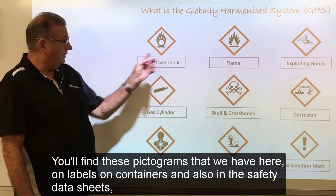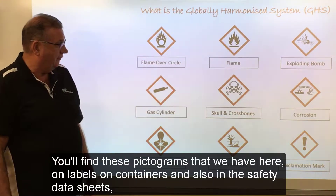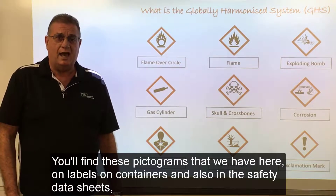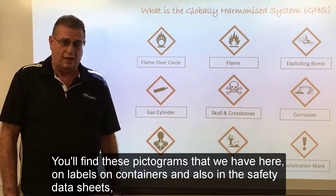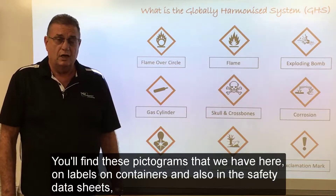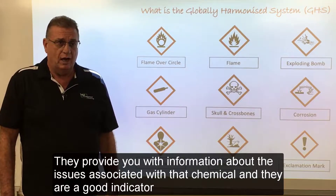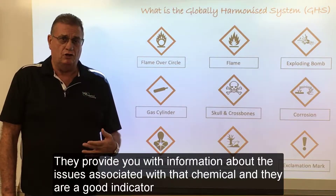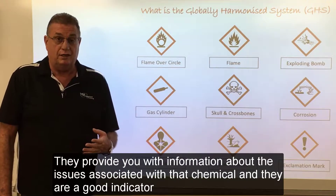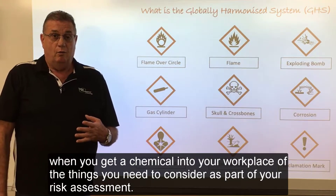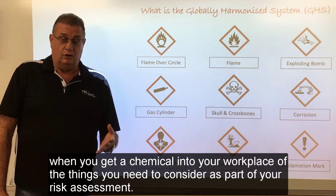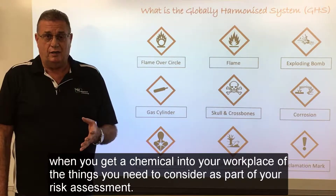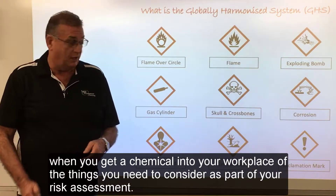You'll find these pictograms on labels on containers and also in the safety data sheets. They provide you with information about the issues associated with that chemical and they're a good indicator, when you get a chemical into your workplace, of the things that you need to consider as part of your risk assessment.